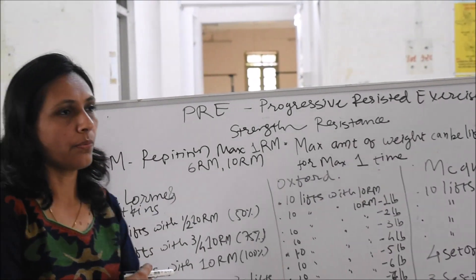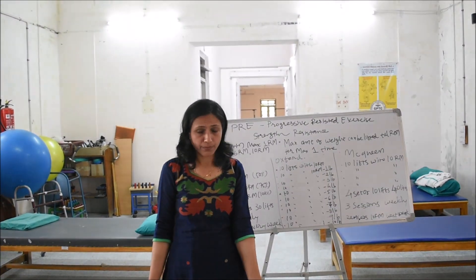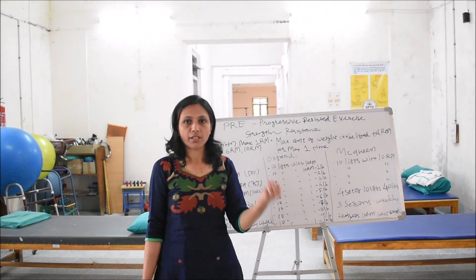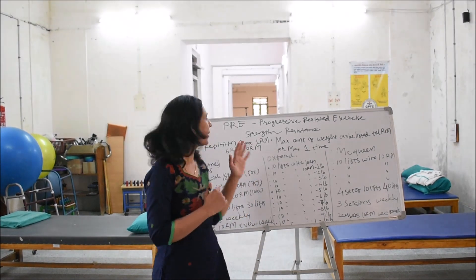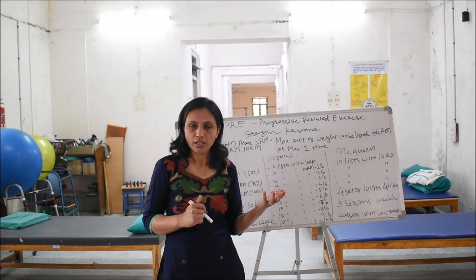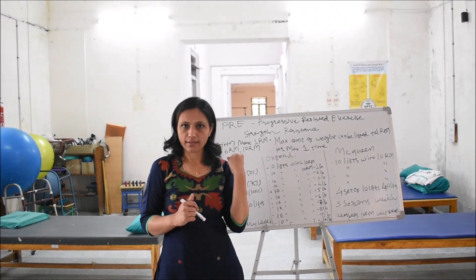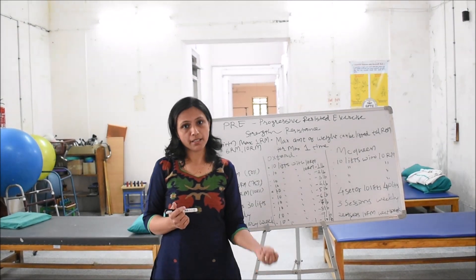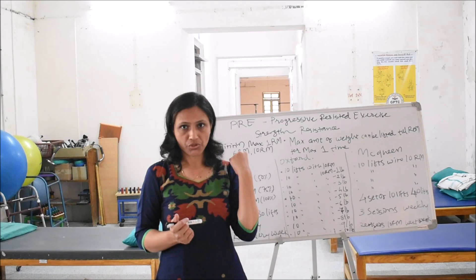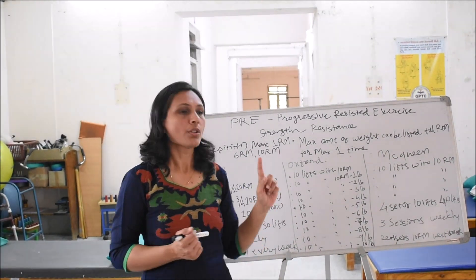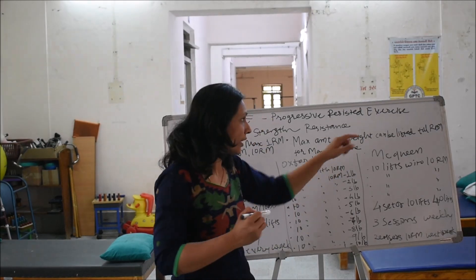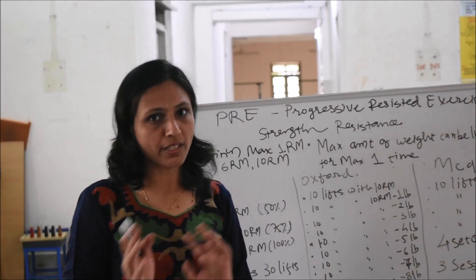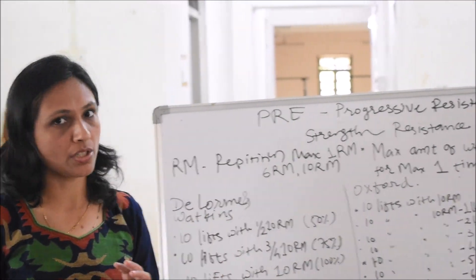For example, for my biceps, if I can lift 10 kg in the full range of motion but can do it 2 or 3 times, then 10 kg is not my 1RM. If I increase to 15 kg and can do it once perfectly but cannot perform a second repetition, then 15 kg is the maximum amount of weight that can be lifted in full range of motion for a maximum of one time — that is my 1RM. This value will be different for each patient and each muscle.